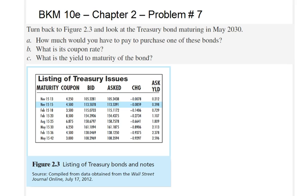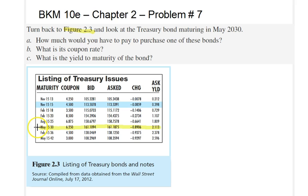Let's go ahead and highlight some key facts provided in the problem. We are told to look at figure 2.3, which is provided right underneath this problem, and look at the Treasury bond maturing in May 2030. May 2030 would be this row over here, and for this Treasury bond maturing in May 15, 2030, we would like to solve the following questions.